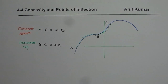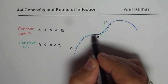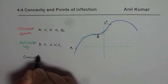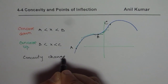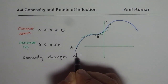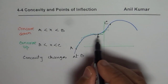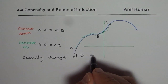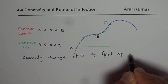Now what happens at point B? That is important. At B, the concavity changes. So we say concavity changes at B, and this point B is called a point of inflection.